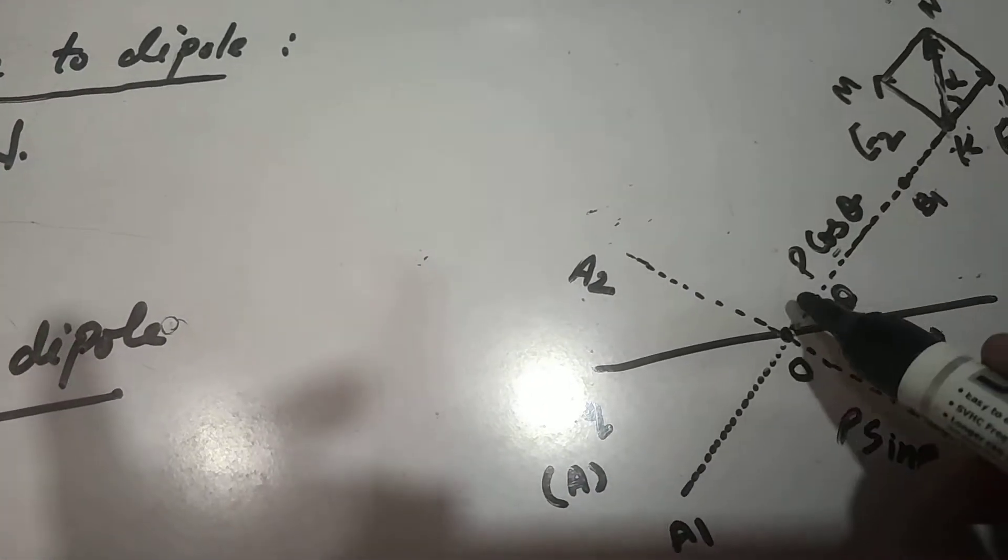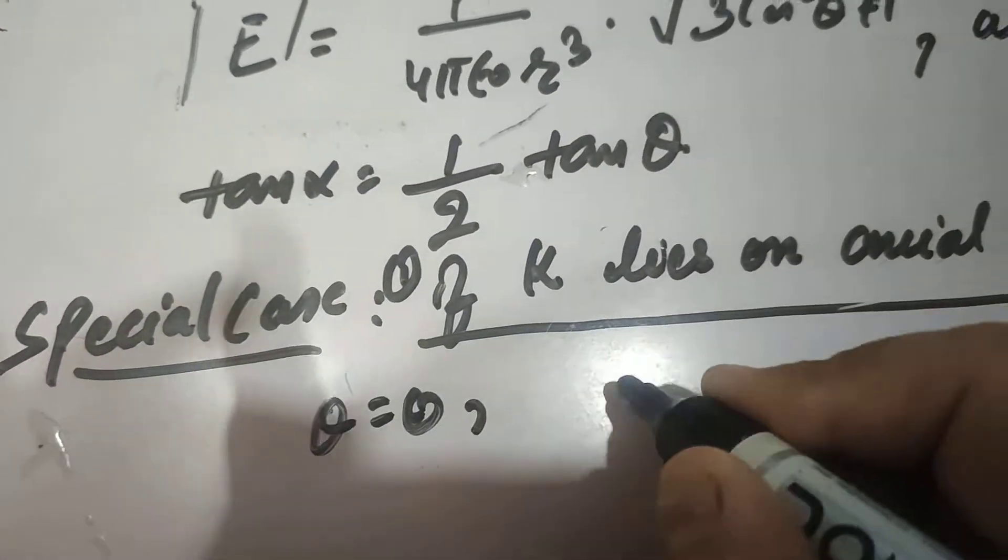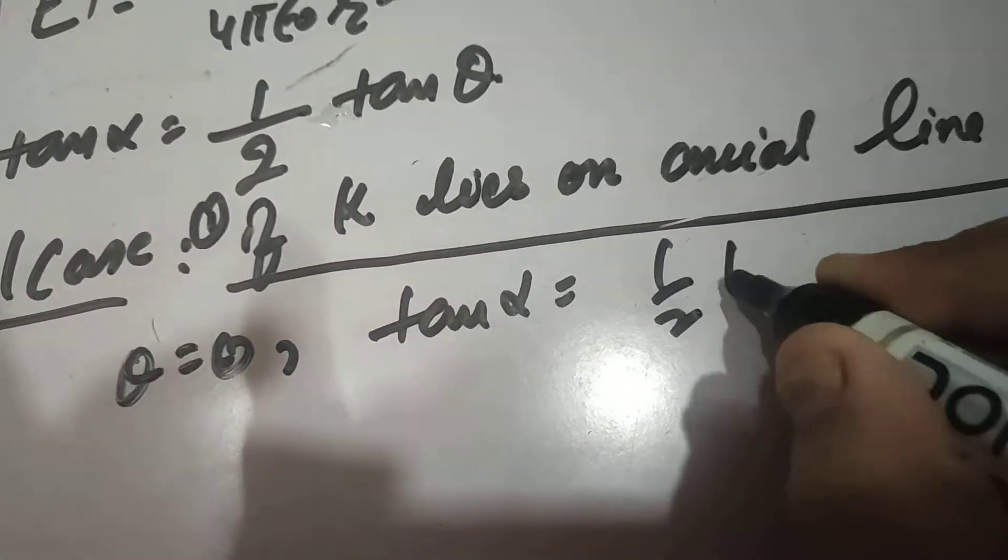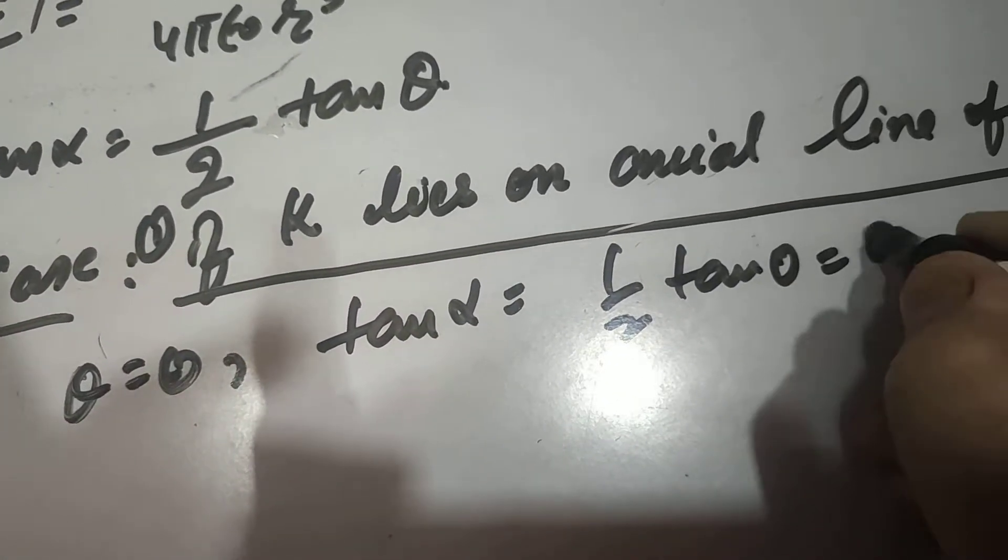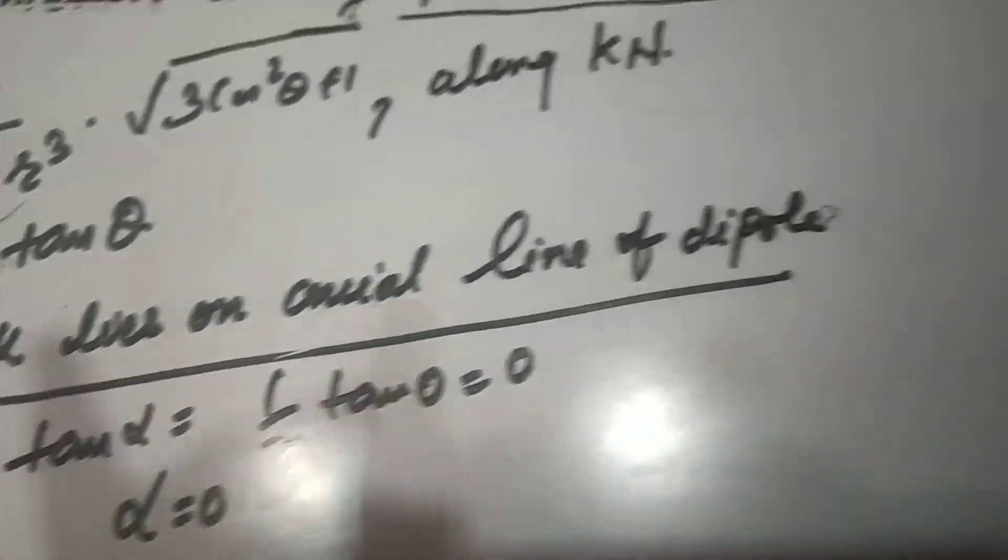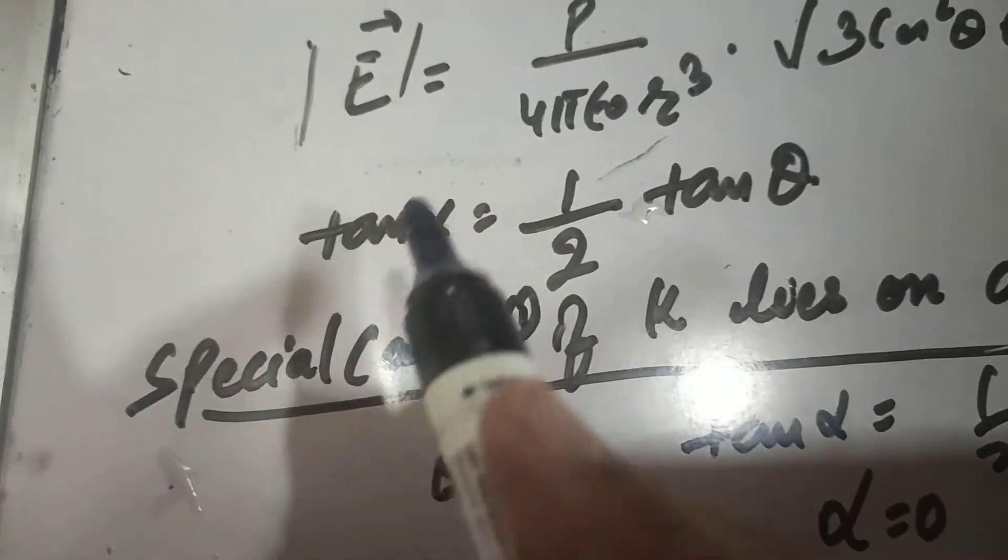So it will be on axial line only when this angle theta becomes 0. Putting theta is equal to 0, we will get tangent alpha is equal to 1 by 2 tangent 0, which is equal to 0. And tangent 0 means alpha is equal to 0. So it is clear that alpha is equal to 0, so direction is along KL.